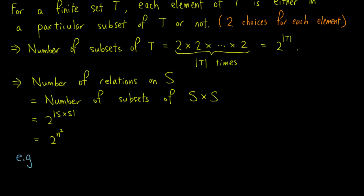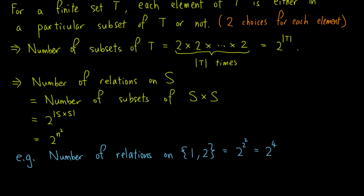For example, the number of relations on the set {1, 2} equals 2 to the power 2 squared, which is equal to 2 to the 4, which is 16.